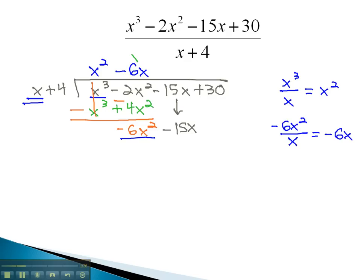Again, we will multiply that negative 6x by both the x and the 4. As we do, we get negative 6x squared minus 24x.